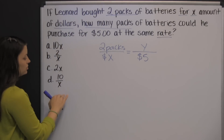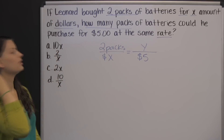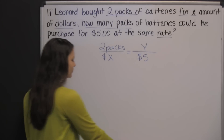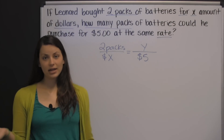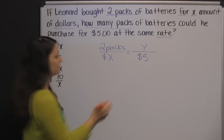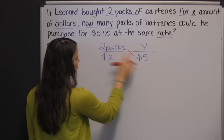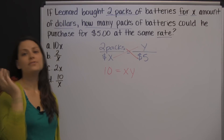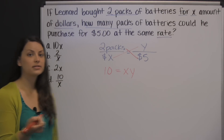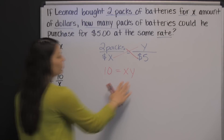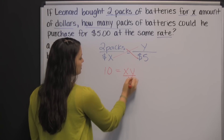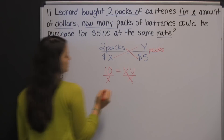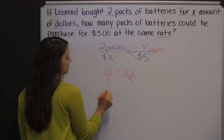Notice that in our multiple choice answers, they all have the variable x in them. So we're solving for y, which is a bit unusual with two variables. To solve this proportion, we use cross-products — cross-multiply. Two times five is ten, and that equals x times y. We have to remember we're trying to solve for y, not x. x is actually part of our answer. In order to get y alone, we need to undo multiplying by x by dividing by x. So y, the number of packs of batteries Leonard can buy, is 10 divided by x.